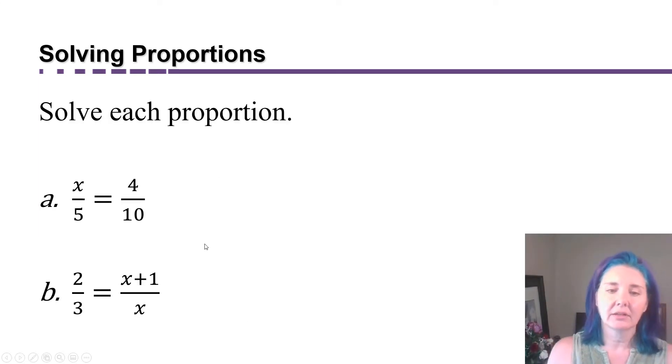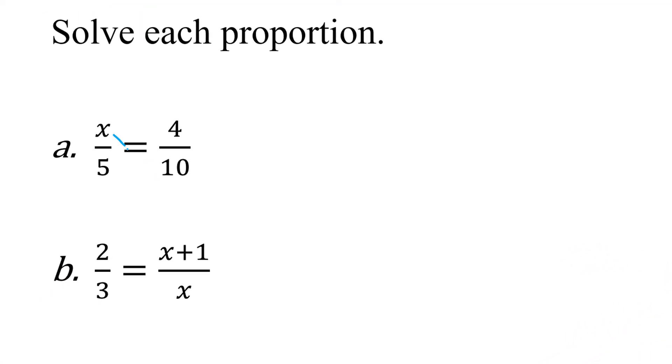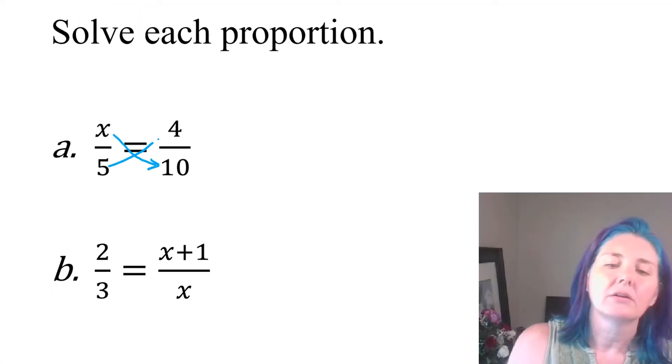Let's look at solving some proportions. I'll start with x over 5 equals 4 over 10. How do we get x by itself? With proportions, there's a nice little trick that you can use, like a shortcut, which is that you can actually multiply across.